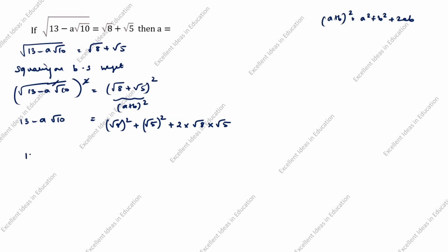So 13 minus a root 10 equals: root 8 into root 8 is 8, plus root 5 into root 5 is 5, plus 2 into root 8 into root 5 is root 40. Therefore, 13 minus a root 10 equals 8 plus 5, which is 13, plus 2 root 40.